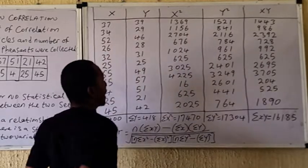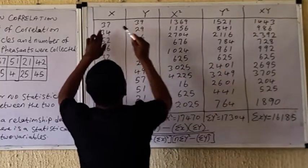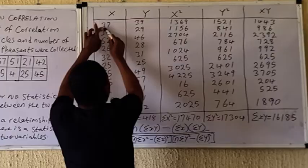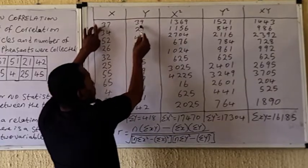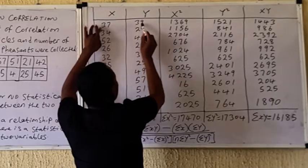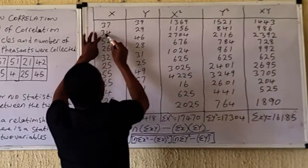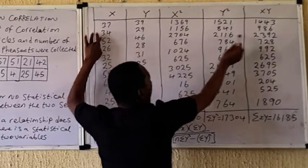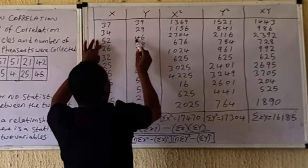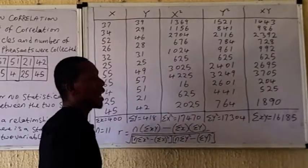The next column is XY — that is X times Y. So 37 multiplied by 39 gives you this value, 34 multiplied by 29 gives you this value, 52 multiplied by 46 gives you this value. Continue down all the rows.